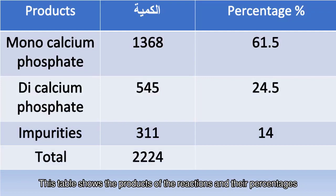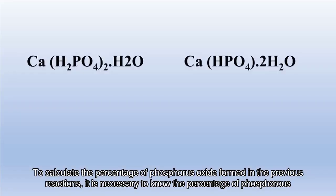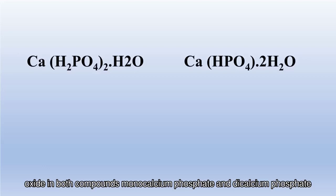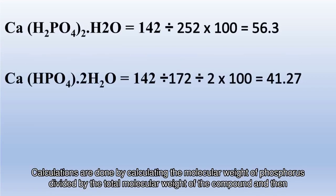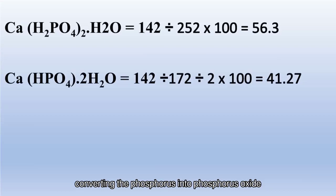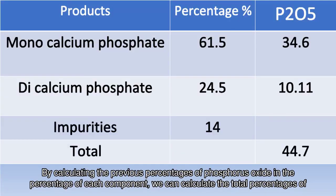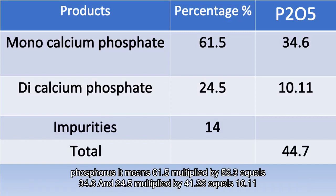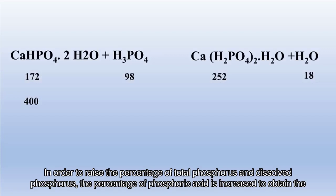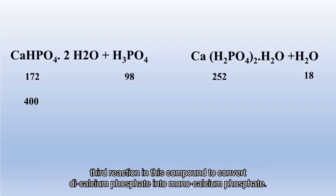This table shows the products of the reactions and their percentages. To calculate the percentage of phosphorus oxide formed, it is necessary to know the percentage of phosphorus oxide in both monocalcium phosphate and dicalcium phosphate, calculated from the molecular weight of phosphorus divided by the total molecular weight of the compound, then converting phosphorus to phosphorus oxide. The total phosphorus percentages are: 61.5 × 56.3% = 34.6% from monocalcium phosphate, and 24.5 × 41.26% = 10.11% from dicalcium phosphate. To raise the percentage of total and dissolved phosphorus, the percentage of phosphoric acid is increased to convert dicalcium phosphate into monocalcium phosphate.